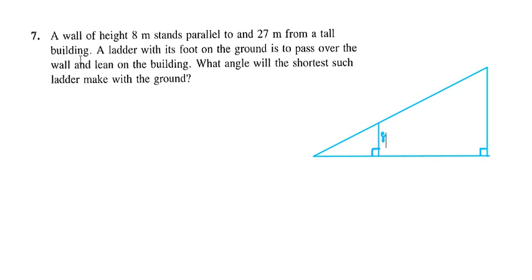The problem reads: a wall of height 8 meters — that's this wall right here in the diagram — stands parallel to and 27 meters from a tall building. A ladder with its foot on the ground is to pass over the wall and lean on the building. What angle will the shortest such ladder make with the ground? So we're looking for this angle theta in order that this ladder is to be the shortest possible.